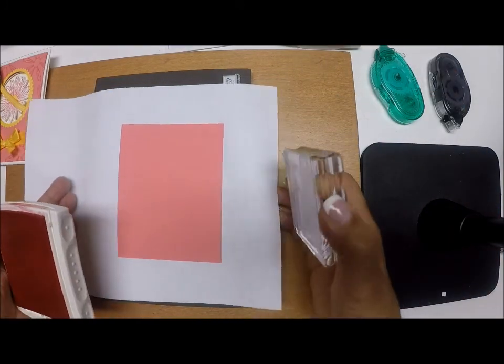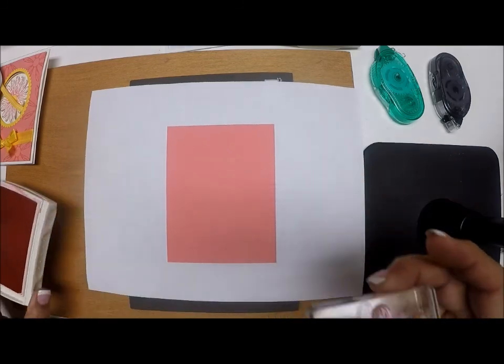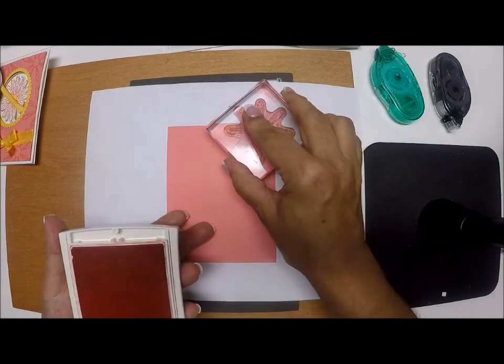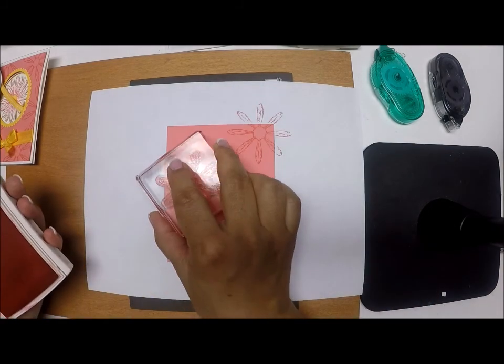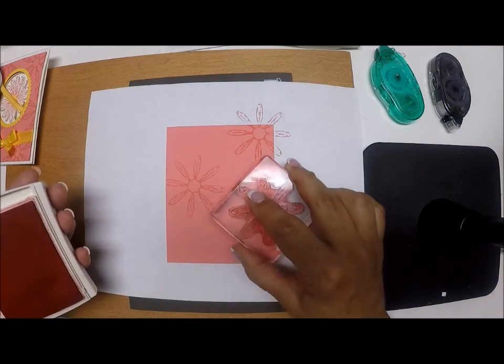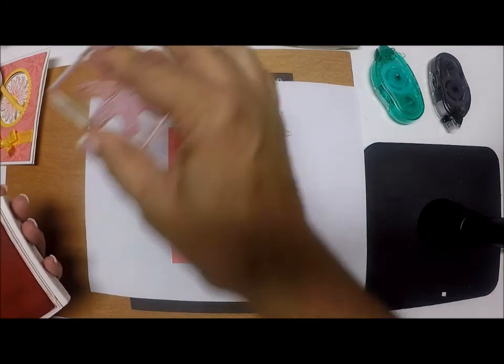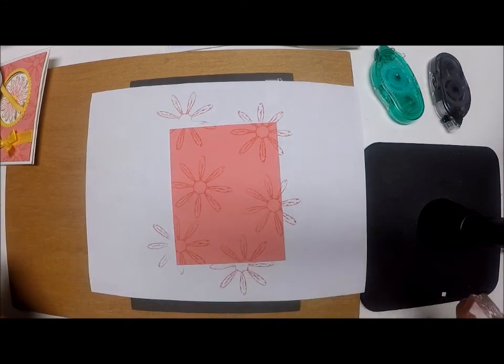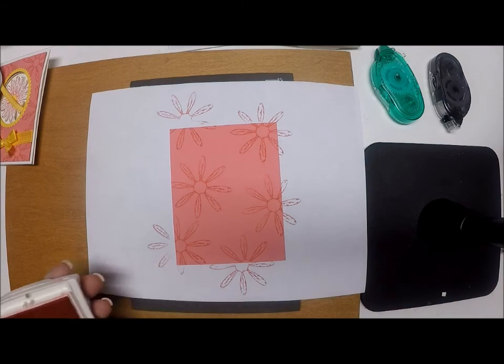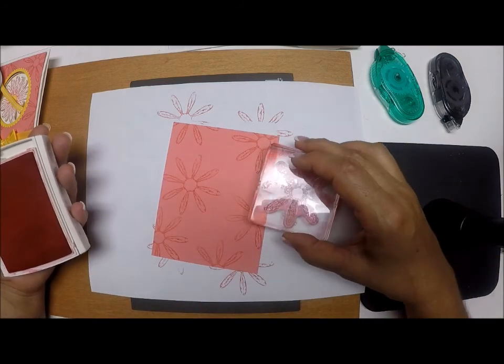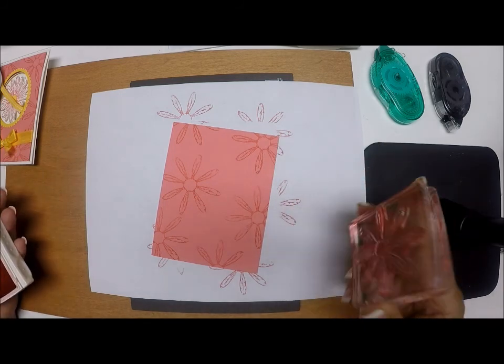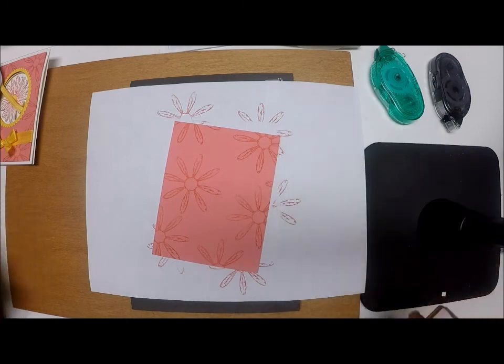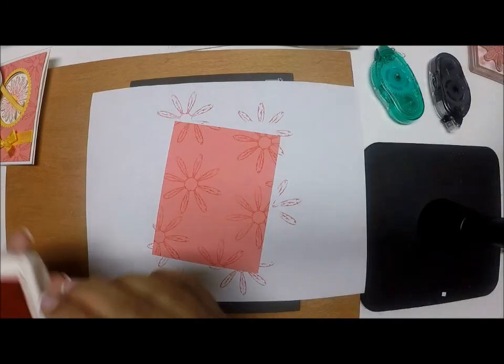So first things first, let's straighten this up here. I'm going to ink up the stamp and just randomly stamp. And I might just put one more petal right here. Maybe not, there's a long one right there. And I think that'll do me.